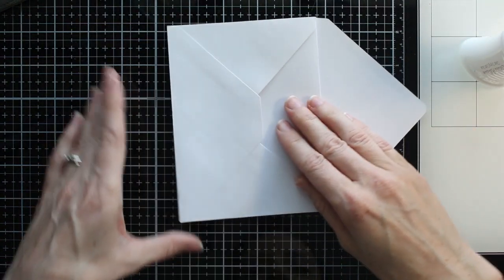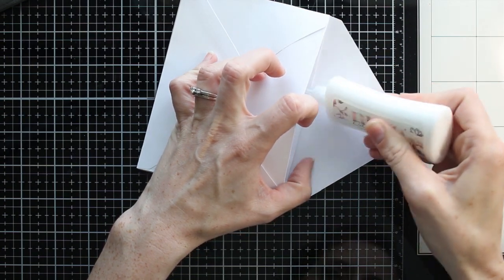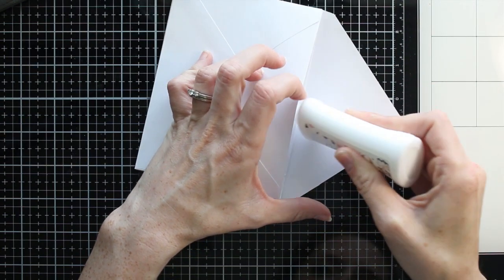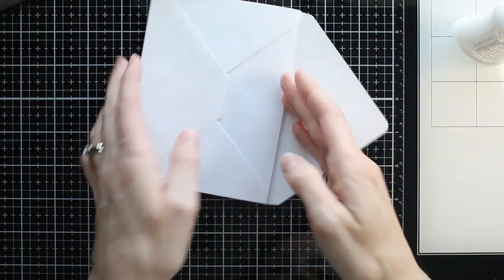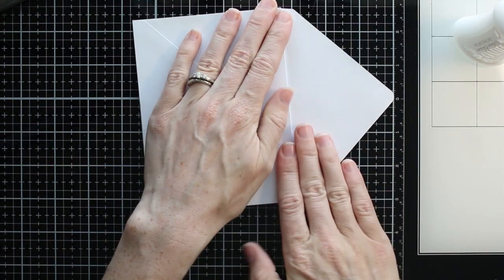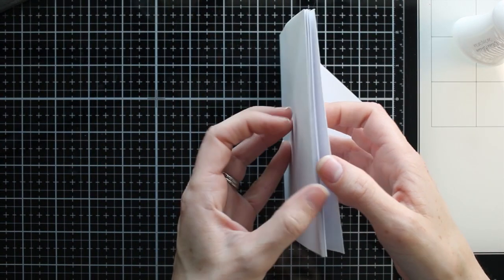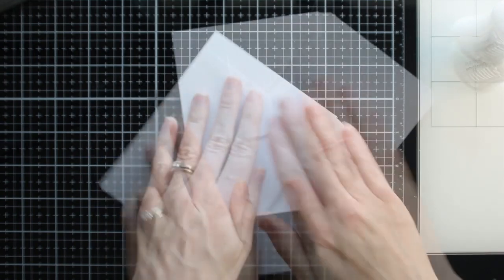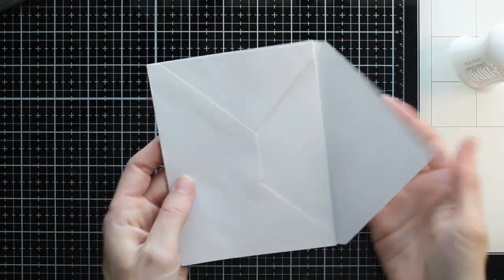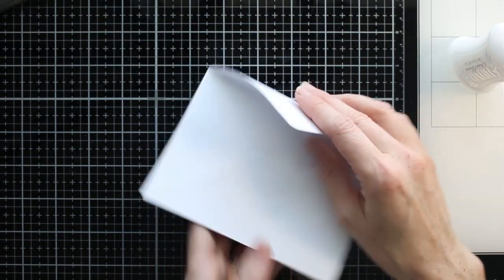I don't know if I'd recommend going more. You could if you wanted to, but at the end you'll see how this album bulks up quite a bit when you get embellishments in there. So putting too many pages in will put some strain on your spine and it'll be more likely to fall apart. So I use six and I think that's a good size for a little mini envelope.